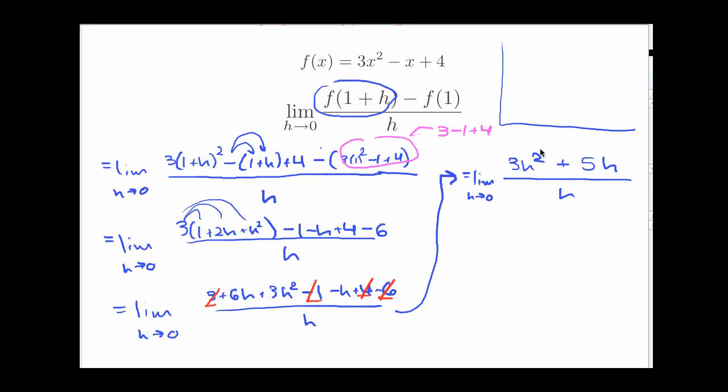If I let h equal 0, it would be 3 times 0 plus 5 times 0 over 0, and of course we get our friend 0 over 0. So what does that mean about the limit? Absolutely nothing. I have no idea what this limit is going to come out to be at this point. When I get 0/0 as a limit result, it means I got to keep working. I need to look at some algebra and try to simplify the expression I have.